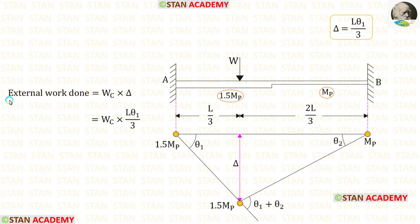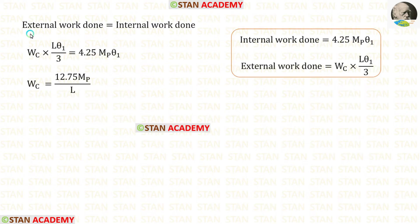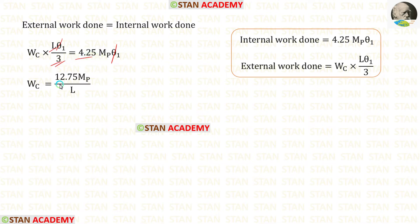Now let us find the external work done. For that we have to multiply the load W with the displacement delta. Substituting delta equal to L theta1 upon 3, this gives the external work done. Equating external work done and internal work done, we can eliminate theta1 and take L upon 3 to the right side. 3 into 4.25 gives 12.75. Finally, the collapse load Wc is equal to 12.75 MB upon L.